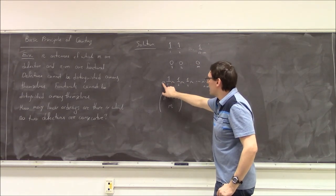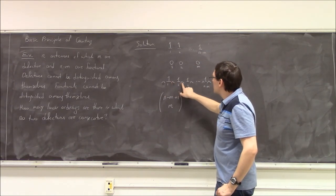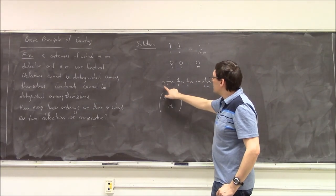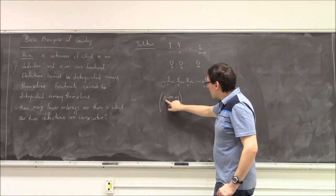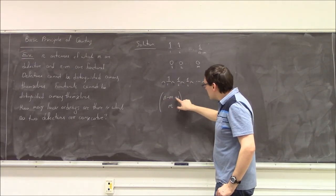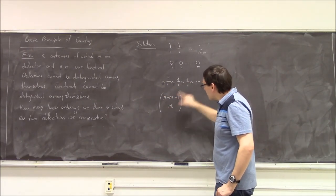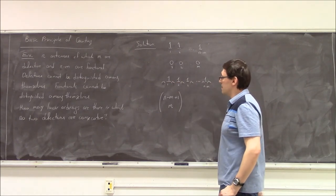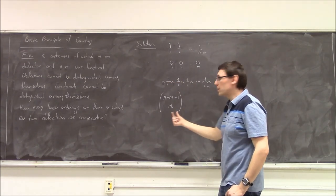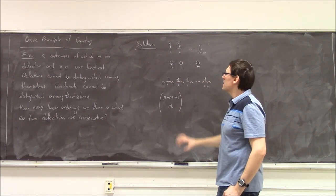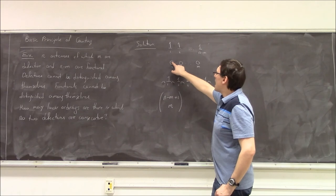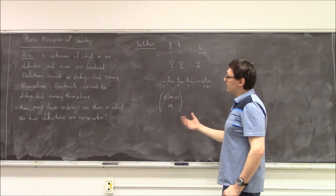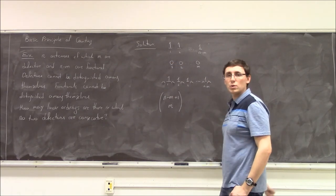So we have n minus m plus 1 distinguishable spaces, out of which m spaces will house the defective antennas. And that's our solution.